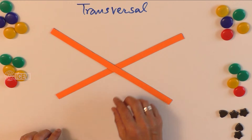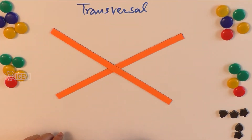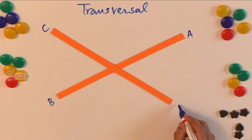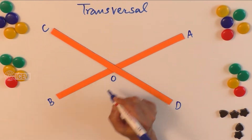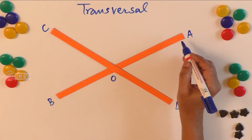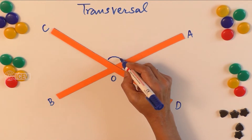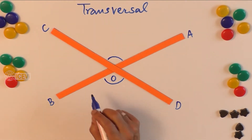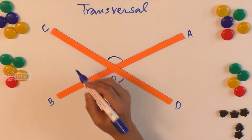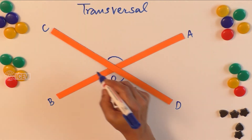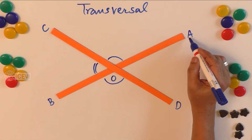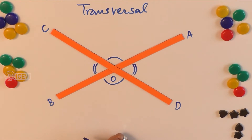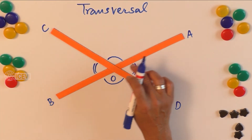These angles are called vertically opposite angles. Let us say there is a line AB and CD, and they are meeting at a point O. The angle AOC and the angle BOD are called vertically opposite angles. Similarly, the angle COB and the angle AOD are also called vertically opposite angles.